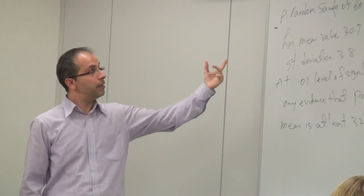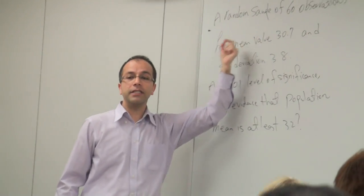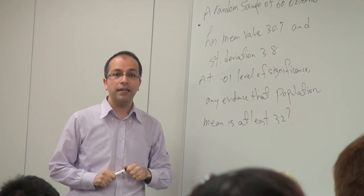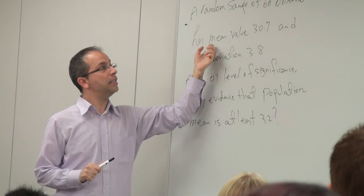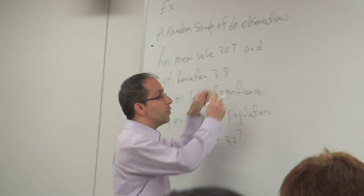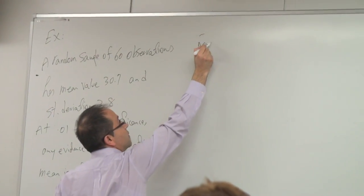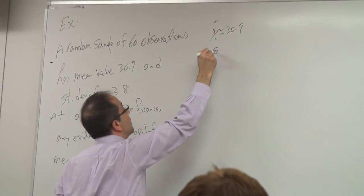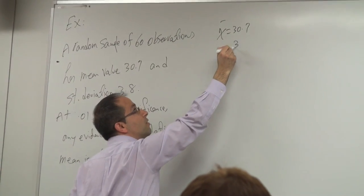We selected a random sample including 60 observations with a sample mean of 30.7 and sample standard deviation of 3.8. So here, x̄ is 30.7 and s is 3.8.